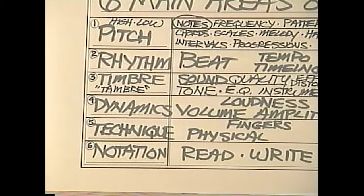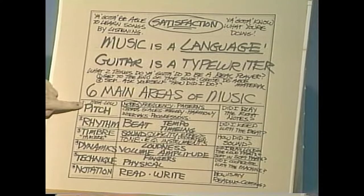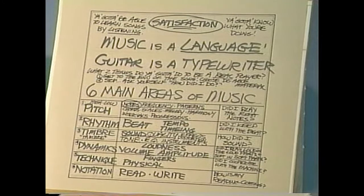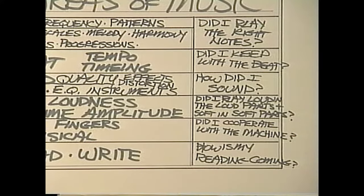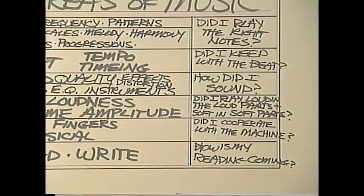Got a lot of stuff to cover this week — amazing stuff. Remember last week, your very first lesson, we actually learned that music is a language and it has six parts of speech. These are the six main areas of music: pitch, rhythm, timbre, dynamics, technique, and notation. In order to be a real player, you've got to make sure that you can answer yes to those six different questions. A lot of people are only fooling themselves into believing that they're playing music.